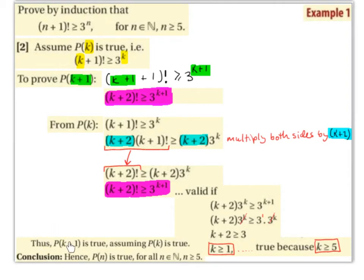Thus P(k+1) is true assuming P(k) is true. Conclusion: hence P(n) is true for all n ∈ ℕ where n ≥ 5.